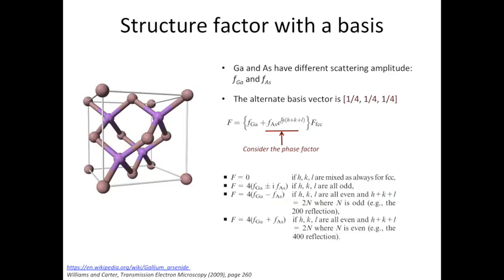The next example we're looking at is gallium arsenide. It's somewhat similar to the sodium chloride example, so we'll not spend too much time. One thing I like to draw your attention to is the alternate basis vector. In this case, it's a quarter, a quarter, and a quarter.